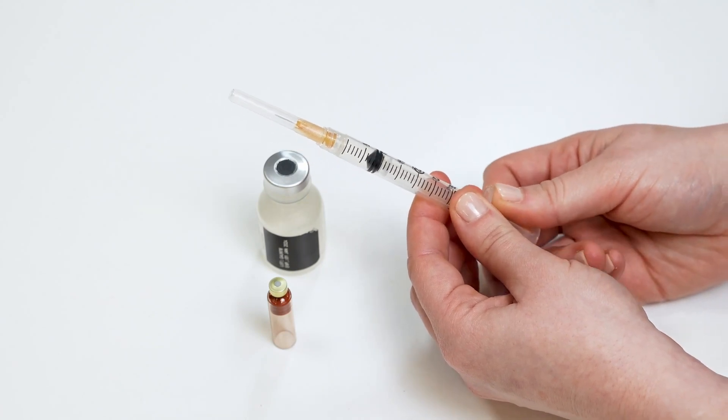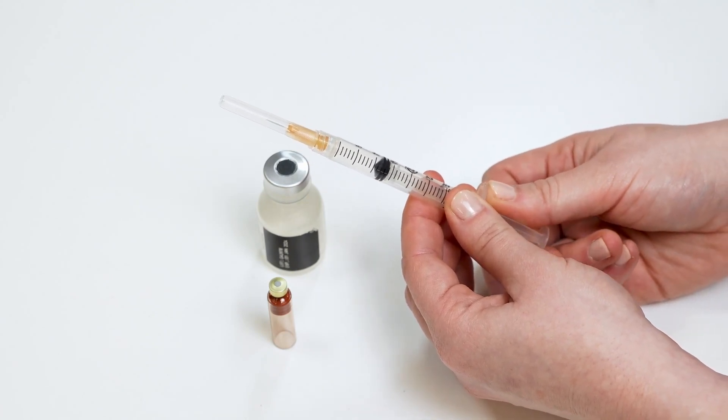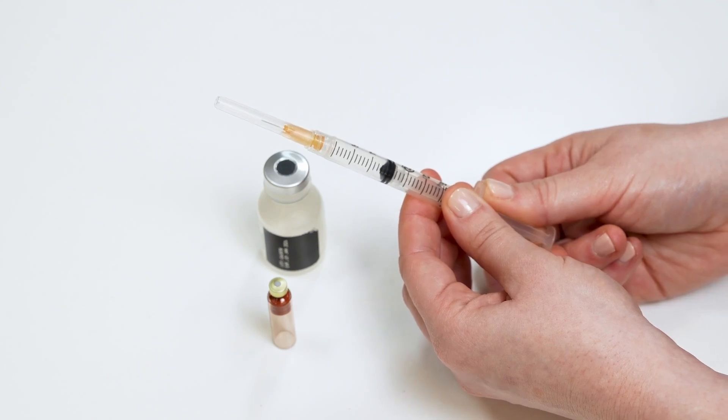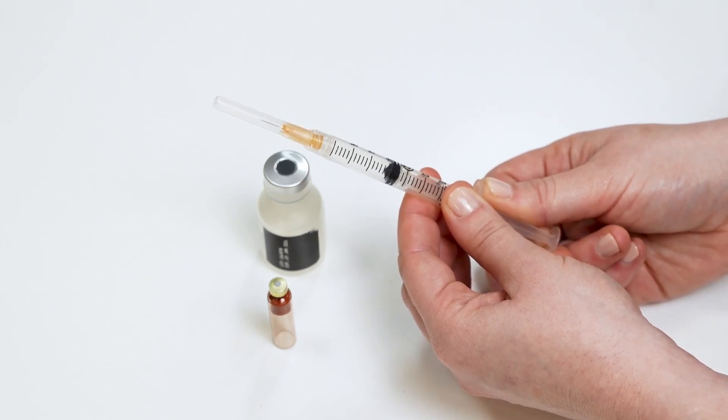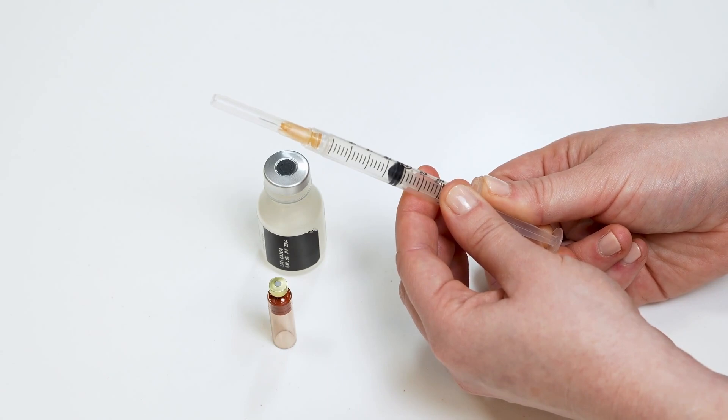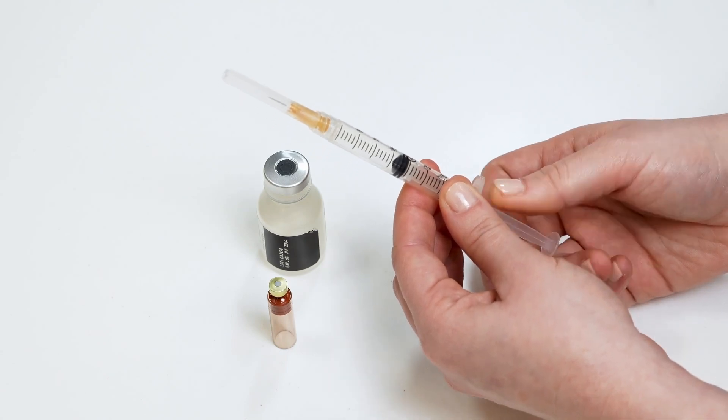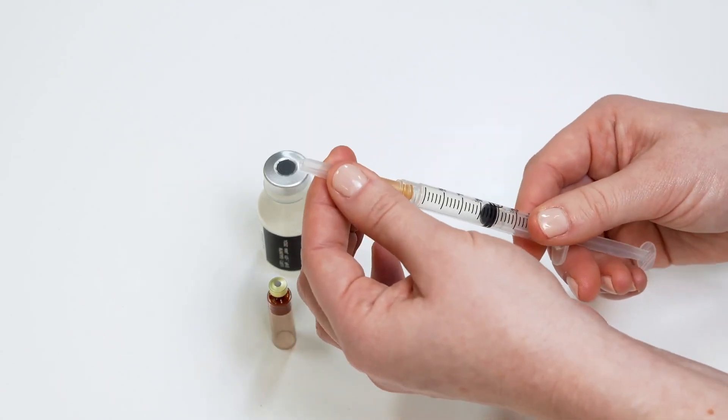Pull back the plunger of the syringe. Make sure the plunger is at the 1.8 ml mark, which is about halfway between the 1.5 and 2 ml marks. Remove the needle guard without touching the needle.